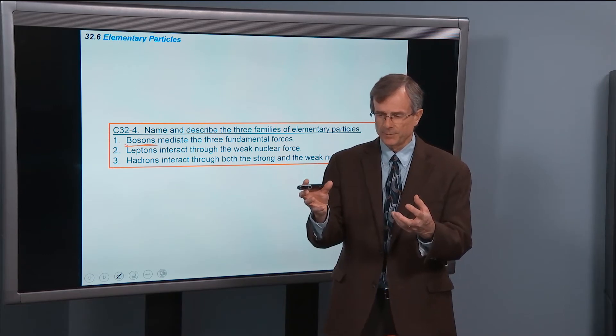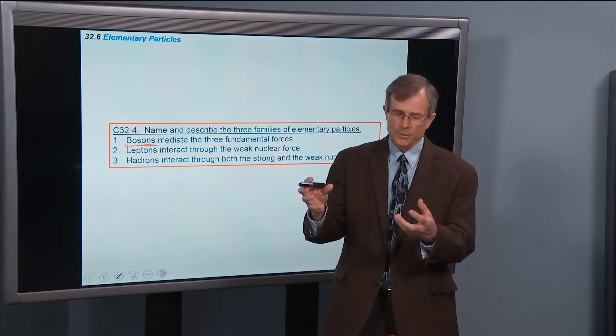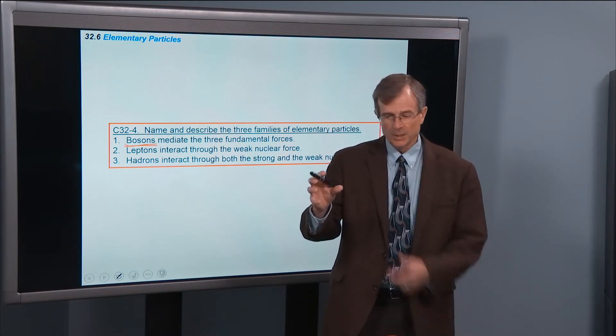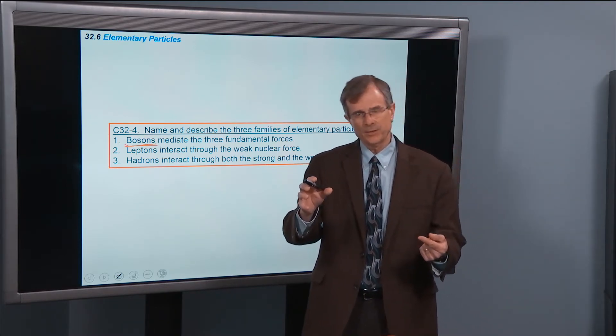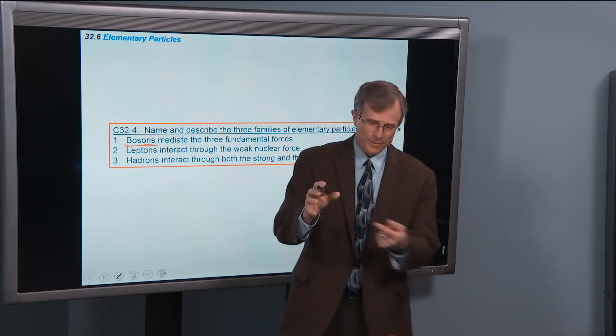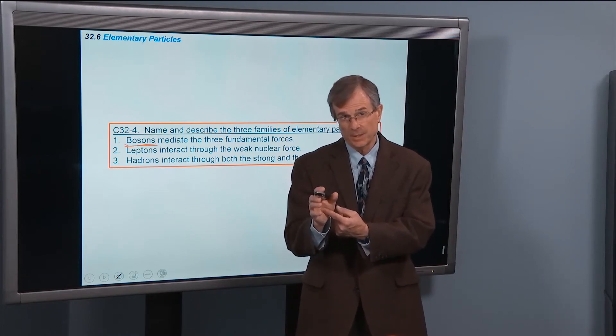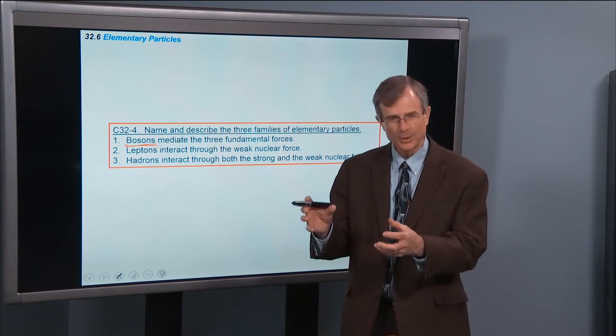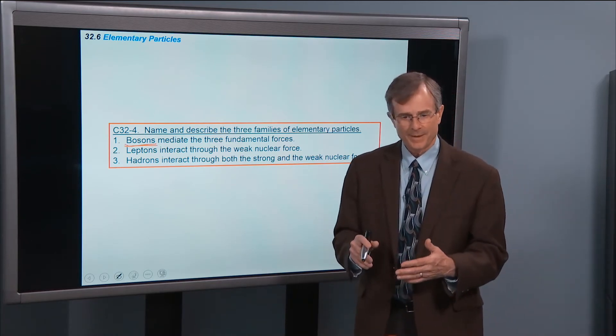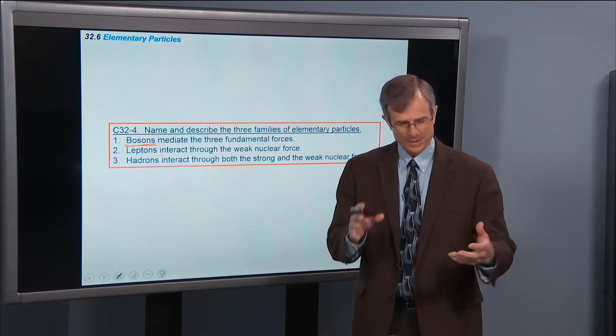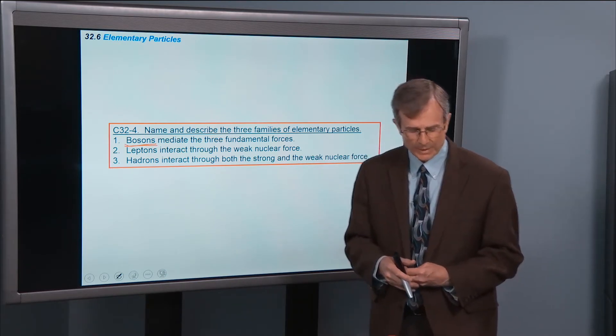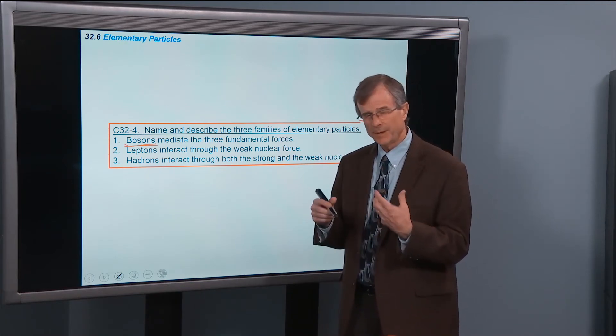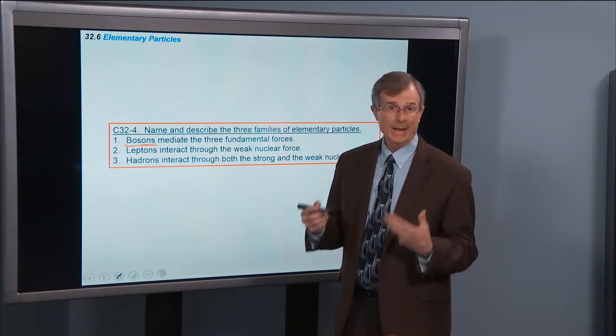If you suddenly blew up the Sun and got rid of it all of a sudden, the Earth wouldn't know until that information had traveled using gravitons that distance between the Earth and the Sun. So there's a little bit of a delay. The Earth is now responding to the gravitational field created by the Sun at the time eight minutes ago, the time it takes light to travel between the Sun and the Earth.